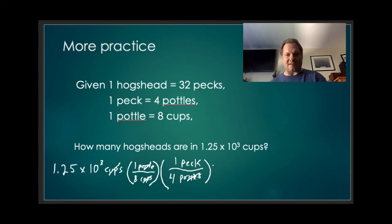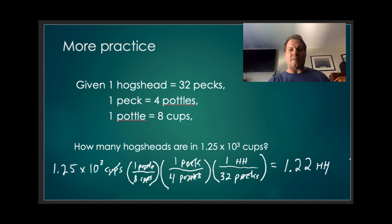Now I've got pecks in the numerator. So I'll use this 32 pecks over here, and I'll put the one hogshead on top. My pecks cancel, and I'm left with the unit hogsheads, which works because I'm looking for hogsheads. And I get 1.22 hogsheads. All right. So we're going to talk a little bit more about how we do this on the calculator when we get together to make sure we're all on the same page.